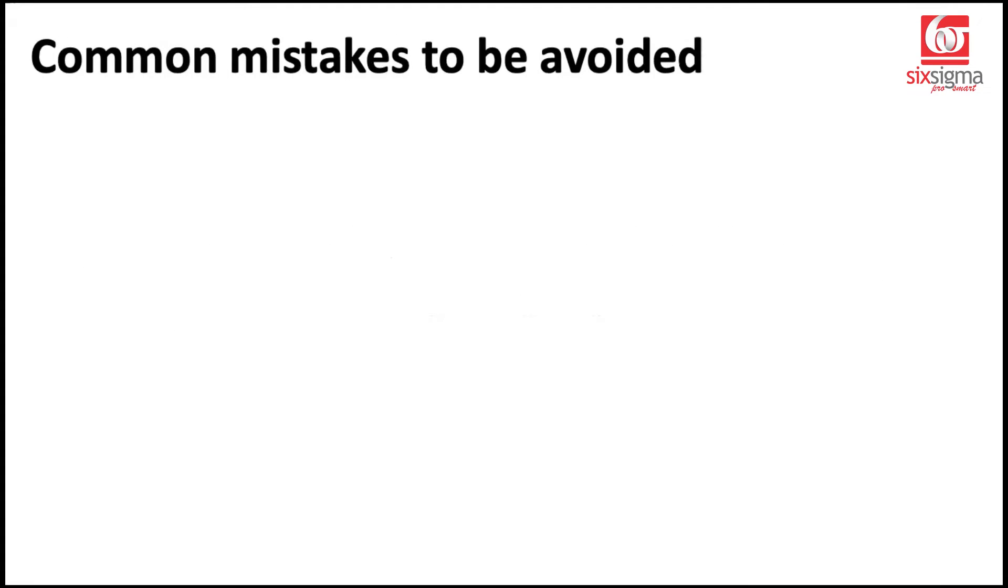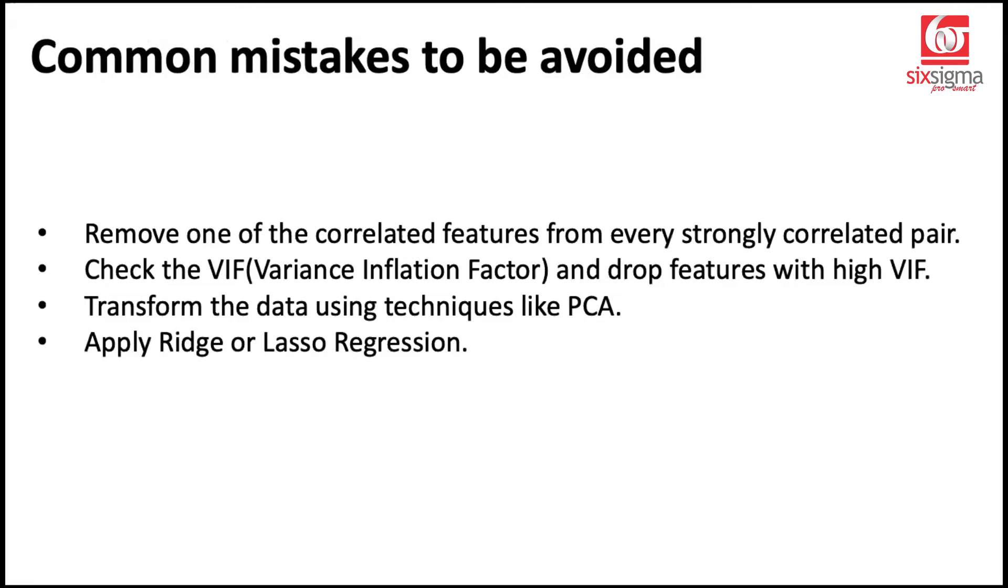Now coming to the common mistakes to be avoided, let's understand what are the possible mistakes that might occur going through these four techniques. So the first approach talks about keeping one of the correlated features and dropping the other. This might be feasible if you have very limited features which are correlated, like seven, eight features. But if you have too many features which are correlated, it might not be a practical technique to work with.